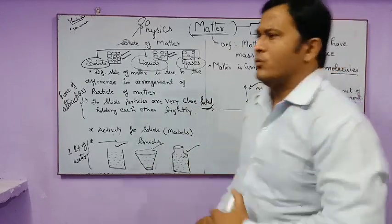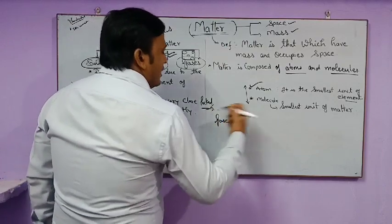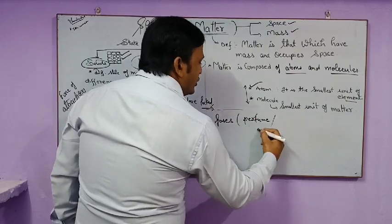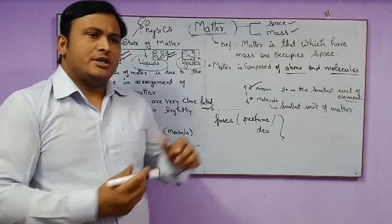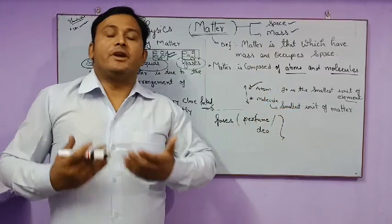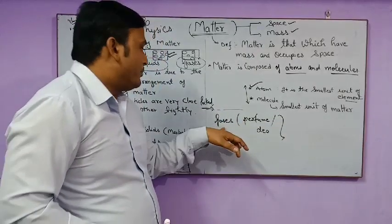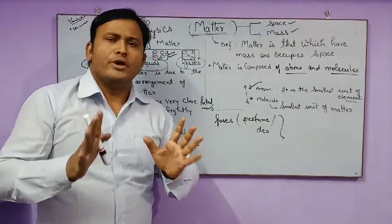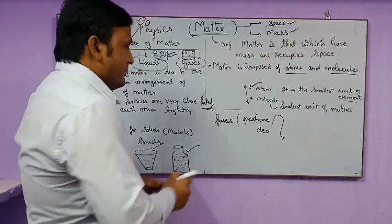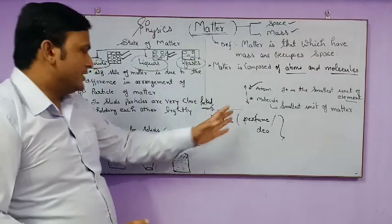Liquids have a definite volume. Now coming to gases — take the example of perfume or a room spray. When you spray perfume in one corner of a room, the smell fills the whole room. This happens because the particles of gases are very free to move from one place to another, so they get scattered throughout the room. That is why particles in gases are loosely packed.